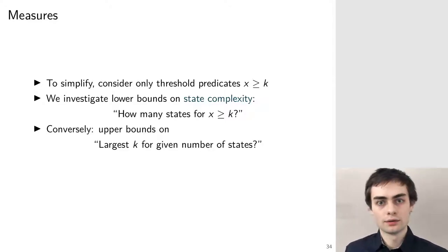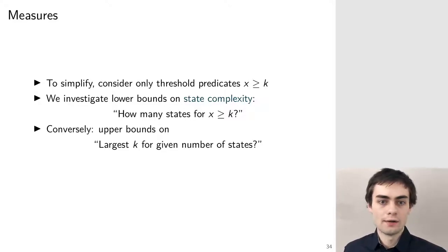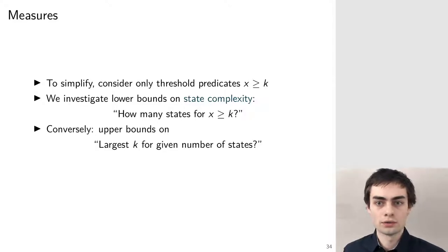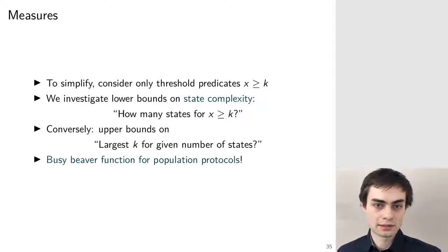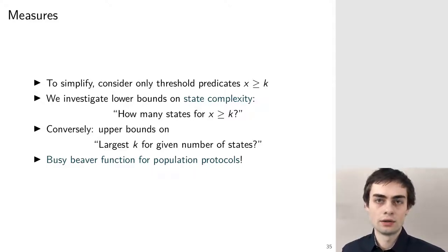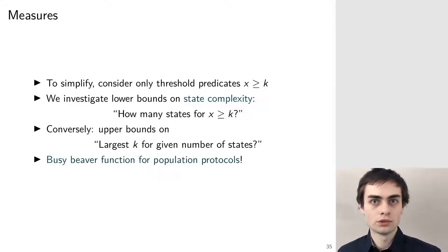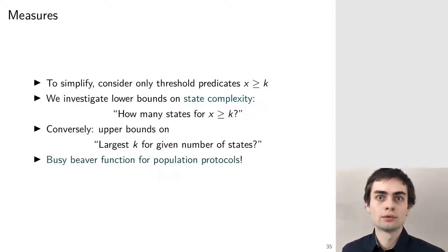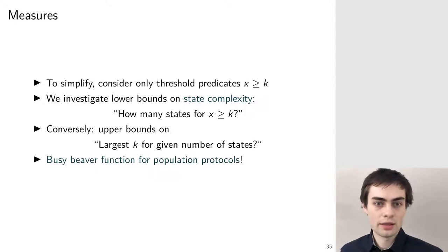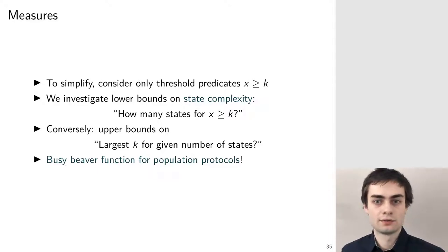There is of course the equivalent question of what is the largest threshold which you can decide given a certain number of states, and it's more intuitive to look at it in this manner. This is an exact analogue of the busy beaver function for population protocols: the busy beaver function is the maximum number of ones a Turing machine can write on a tape for a given number of states, provided it still terminates. For population protocols, the analogue is the largest threshold you can decide given a certain number of states.